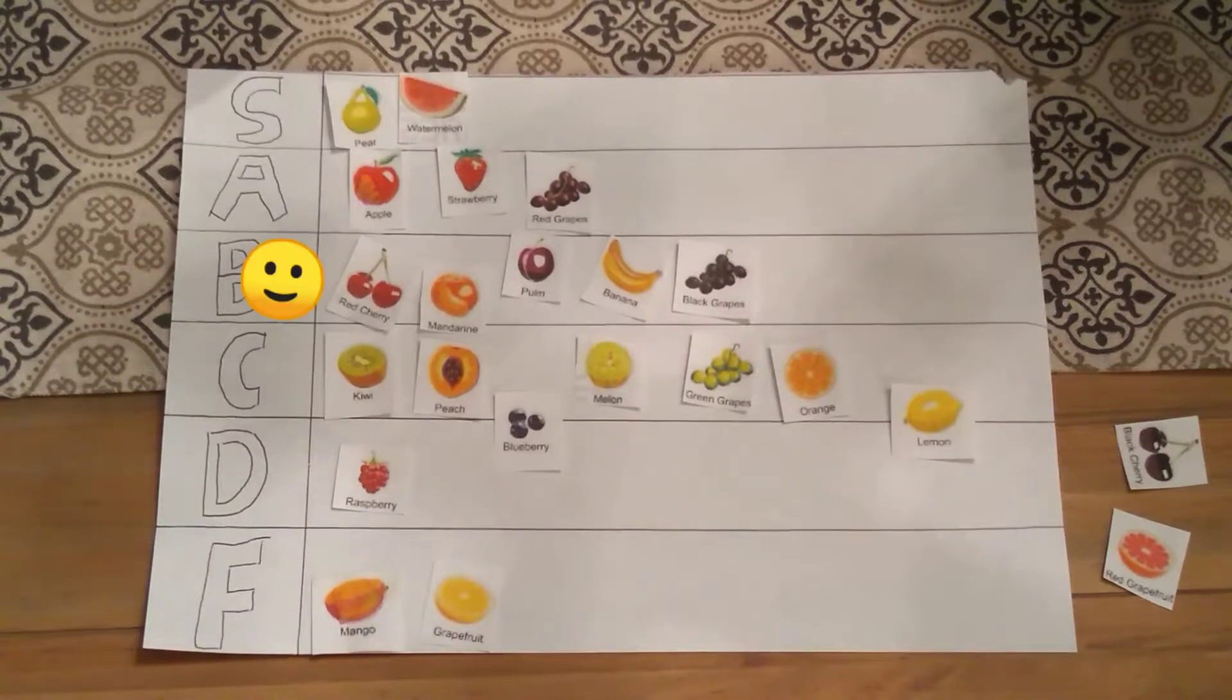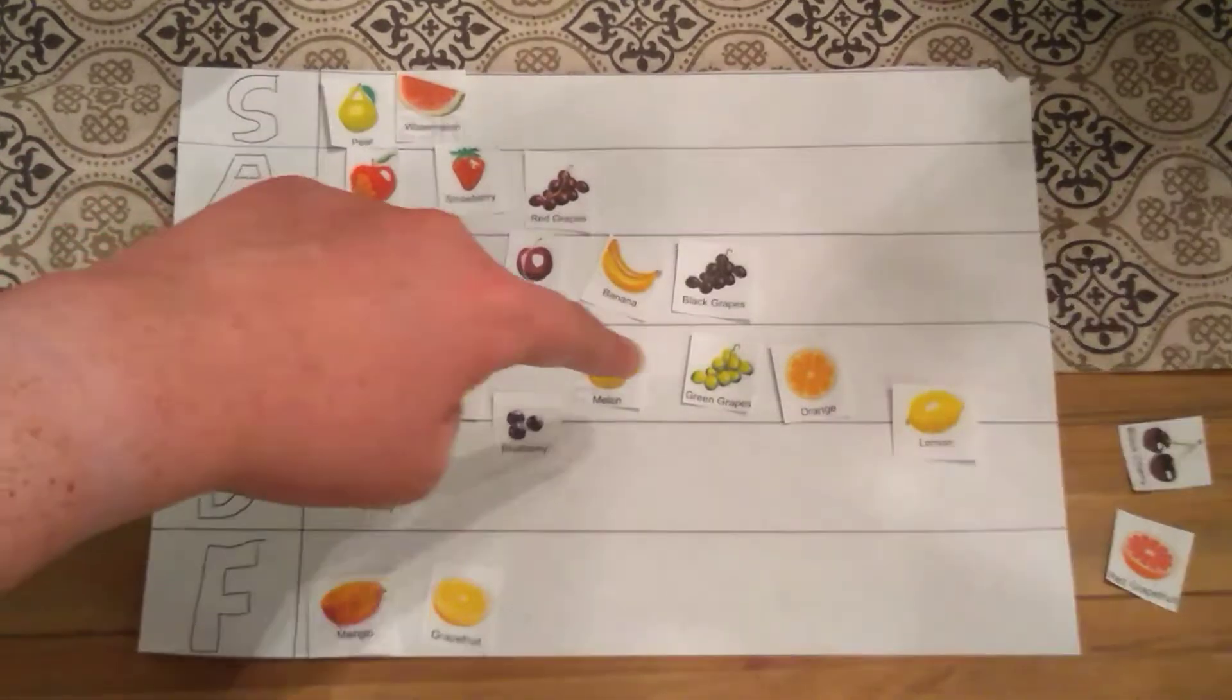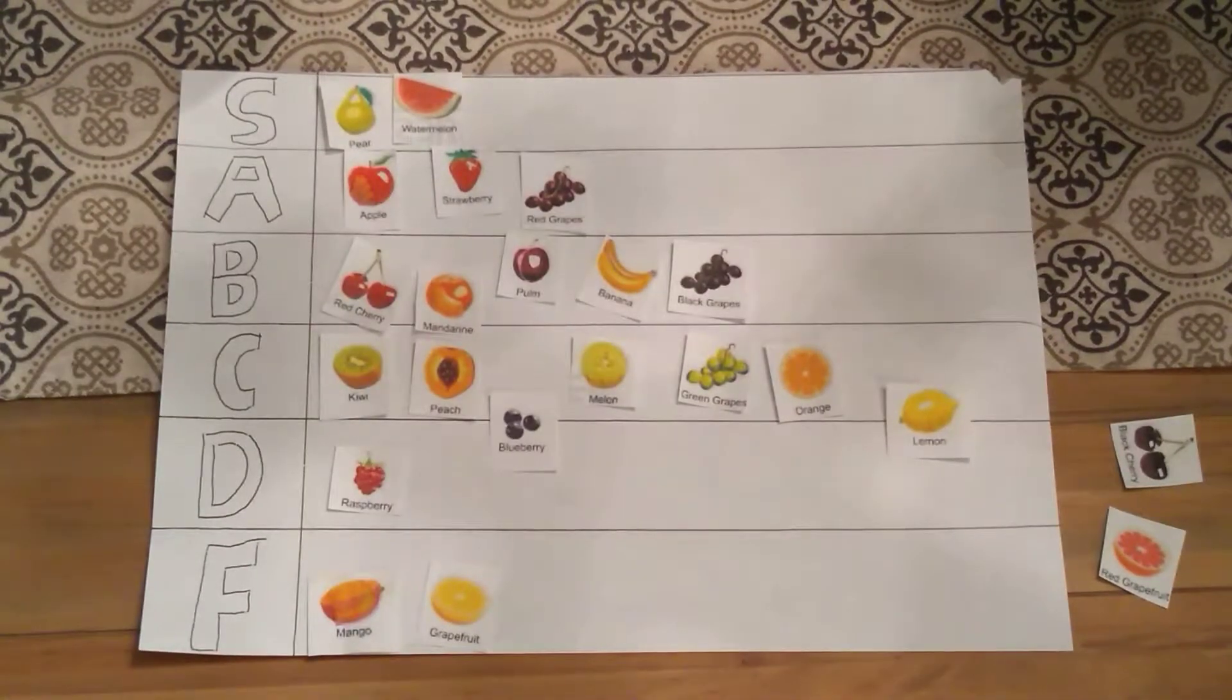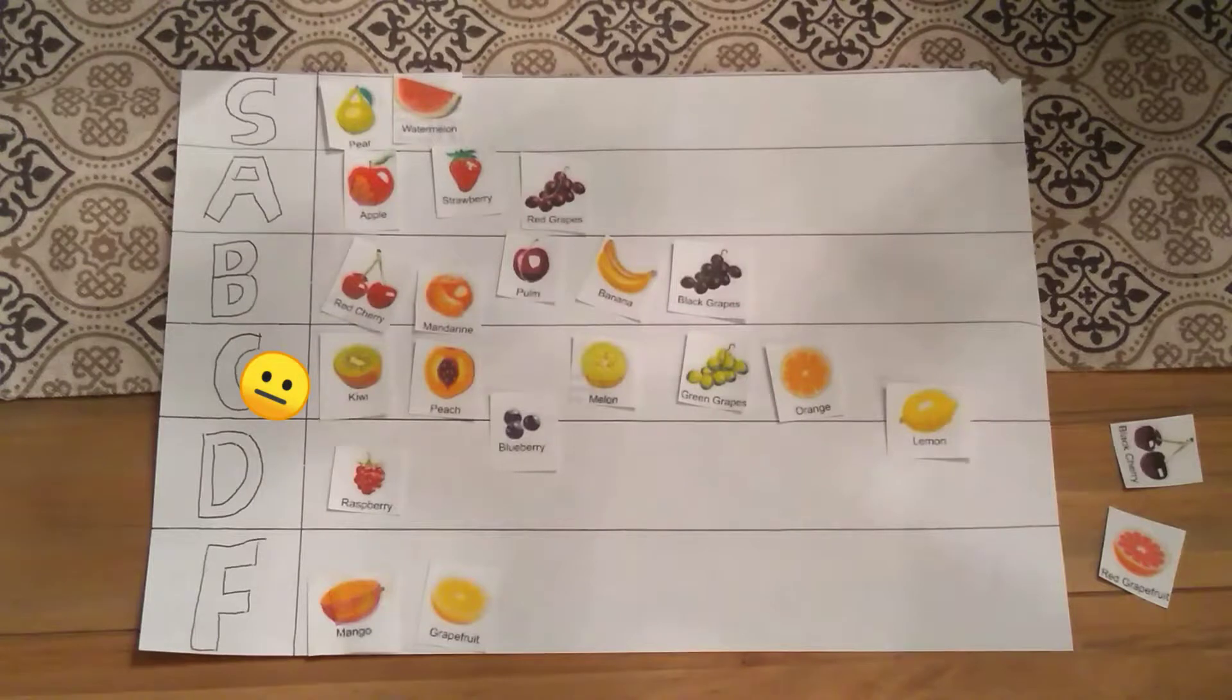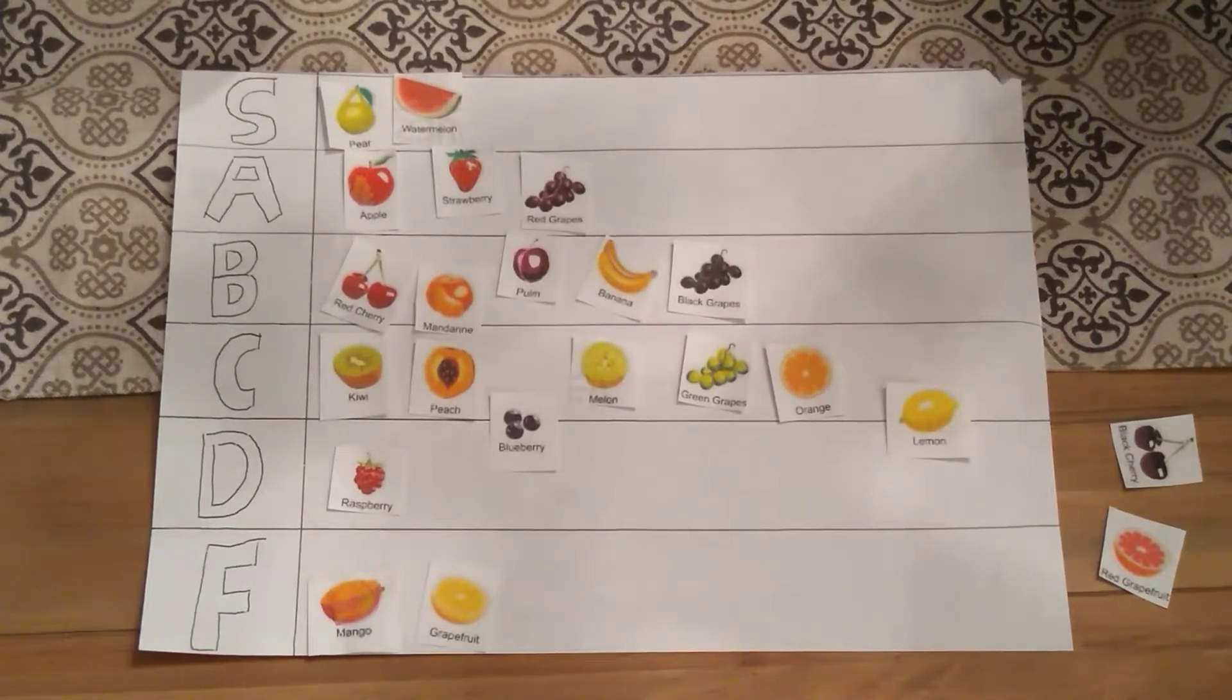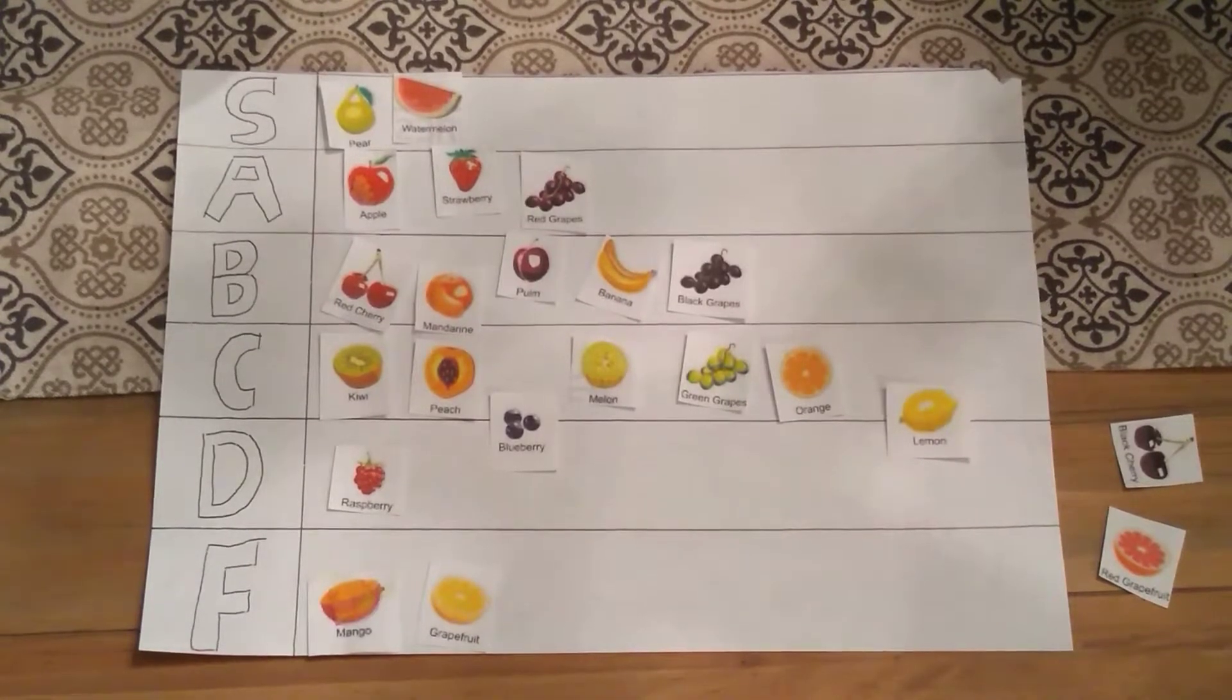C tier. We have kiwi, peach, melon, green grapes, and oranges. They're all pretty mediocre. Actually, no, they're not. If someone forced me to eat them, I would just eat it. But, I wouldn't eat them regularly.